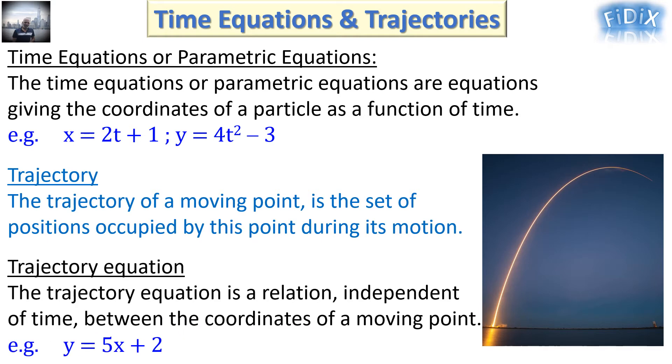Some trajectories can be characterized by a mathematical equation called trajectory equation. It is a relation independent of time between the coordinates of the moving point. For example, y equals 5x plus 2, where we don't see time, just coordinates.